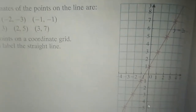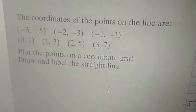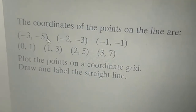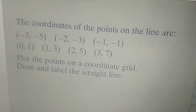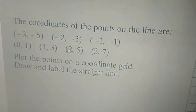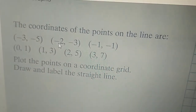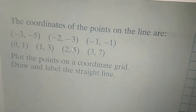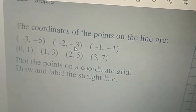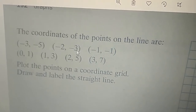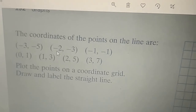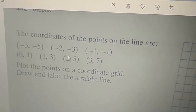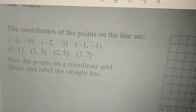Now we will learn about coordinates. Coordinates are the values of x and y. Here we have minus 3 and minus 5 — minus 3 is the x-coordinate and minus 5 is the y-coordinate. Always follow this order: the first number is always the x-coordinate and the second number is always the y-coordinate.